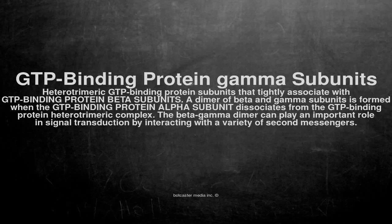GTP-Binding Protein Gamma Subunits are heterotrimeric GTP-Binding Protein subunits that tightly associate with GTP-Binding Protein Beta Subunits. A dimer of beta and gamma subunits is formed when the GTP-Binding Protein Alpha Subunit dissociates from the GTP-Binding Protein heterotrimeric complex.